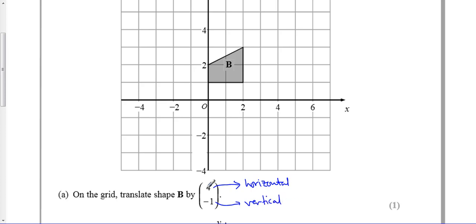The positive 4 means 4 to the right, and the -1 means 1 down. If we pick this corner and move it 4 to the right and 1 down, so it goes 1, 2, 3, 4 to the right and then 1 down, that corner is going to move there.